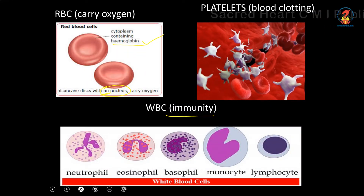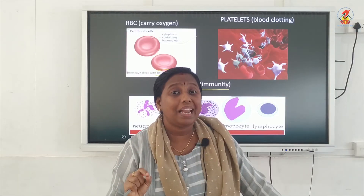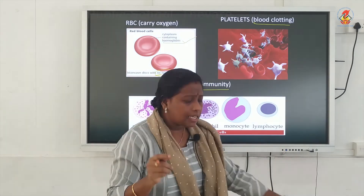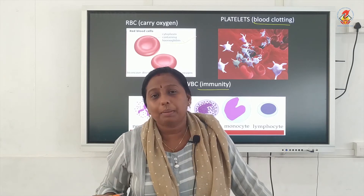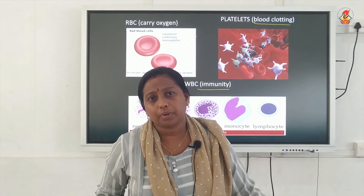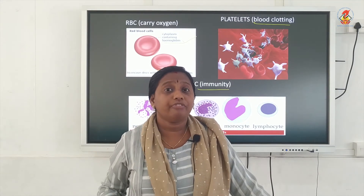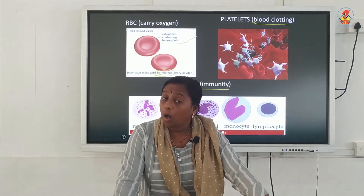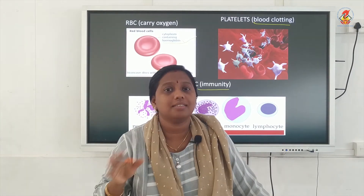The third type of blood cell is platelets. These are tiny particles — tiny blood cells — which help in the process of blood clotting. Whenever there is a small injury in your body, blood will come out of that area and bleeding will occur. After some time, the bleeding will stop. Why does this bleeding stop? Because of the formation of a clot. This clot formation occurs due to the presence of platelets in blood. So hope all three blood cells and their functions are clear.